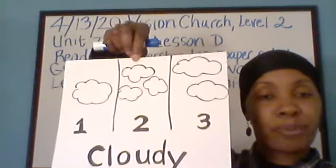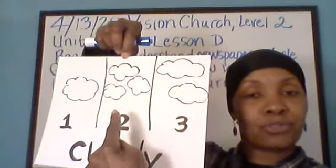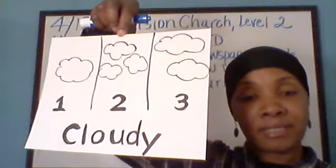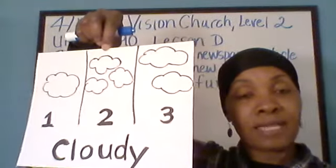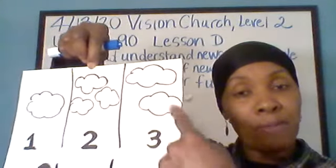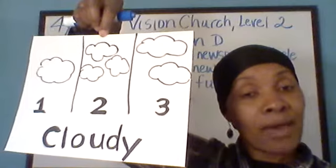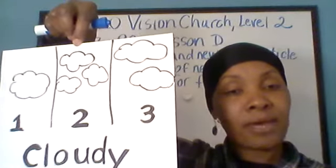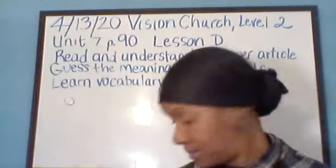This is three pictures of a cloudy sky and the adjective is cloudy. We've got picture one, picture two, and picture three. Which sky is cloudiest? We use the superlative because we're comparing more than two things. The word cloudy ends in Y, so you drop the Y and add I-E-S-T. So which sky is the cloudiest?